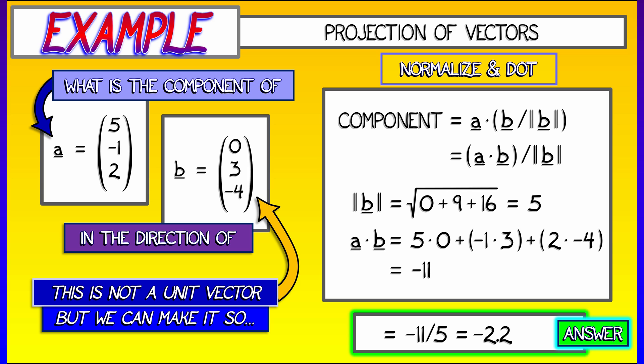And again, what does this mean? This means that a and b are roughly speaking not pointed in the same direction. And the component of a along the b axis is negative 2.2.